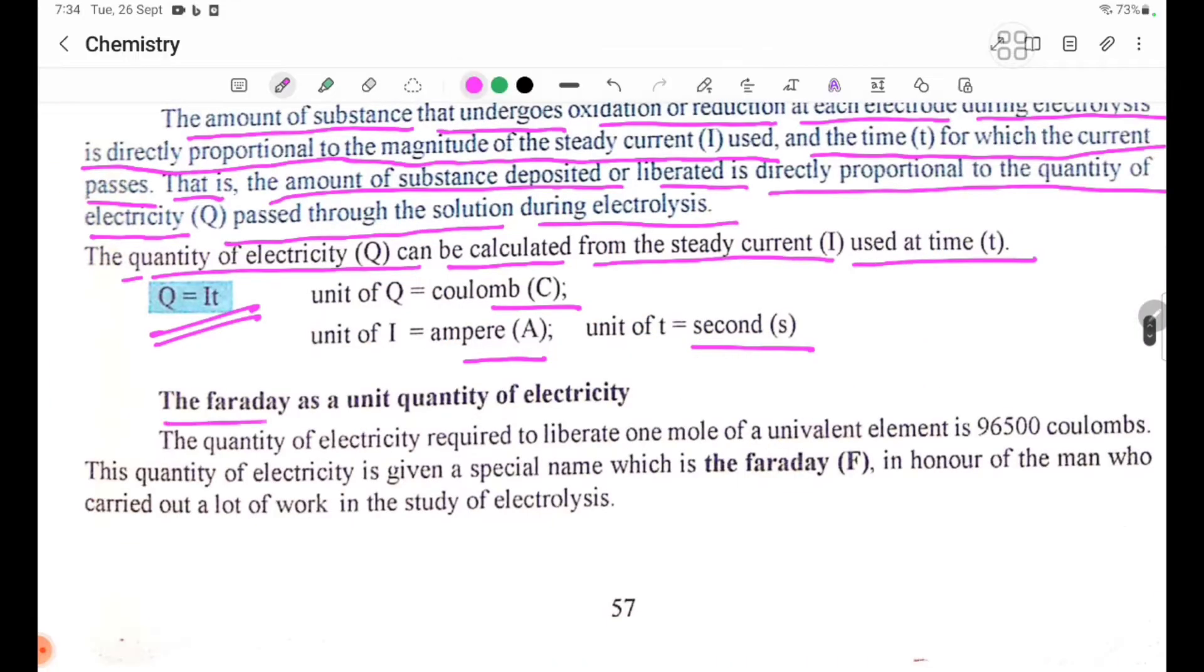The Faraday is a unit quantity of electricity. The quantity of electricity required to liberate one mole of a univalent element is 96,500 coulombs.